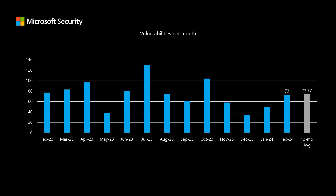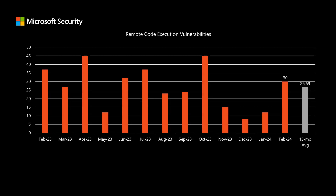Before I dig into the CVEs related to this release, I like to compare how this release looks to the previous 12 months. We've been averaging 73.77 vulnerabilities per month; this month we have a total of 73 newly addressed CVEs. For remote code execution vulnerabilities, we've been averaging right around 26.5 per month, and this month we have 30. Remote code execution vulnerabilities typically have the most risk — they would allow threat actors to install software and perform other nefarious actions.